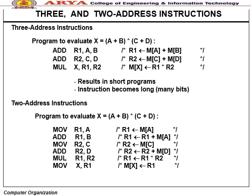Three-address instruction example — evaluate X = (A + B) × (C + D): ADD R1, A, B (content of A + B → R1); ADD R2, C, D (content of C + D → R2); MUL X, R1, R2 (R1 × R2 → memory X). Result: short program but long instructions with many bits.